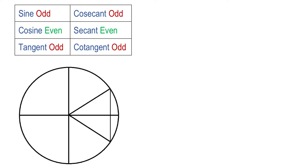We know that if from the positive x-axis we move in a counterclockwise direction, then t will be positive. For example, let t have the value of pi over 6.